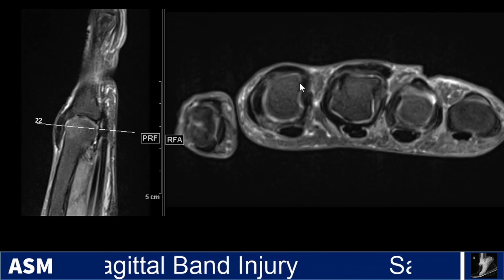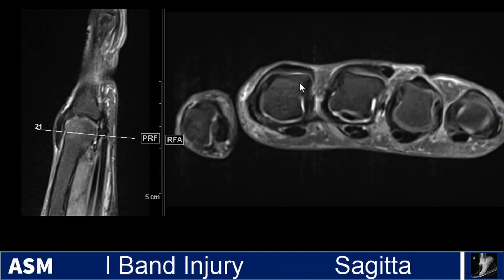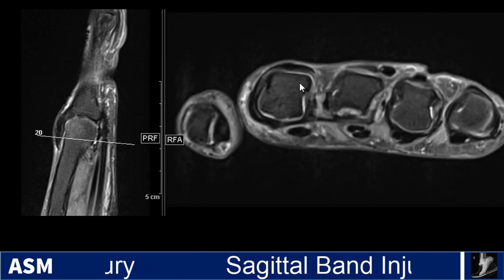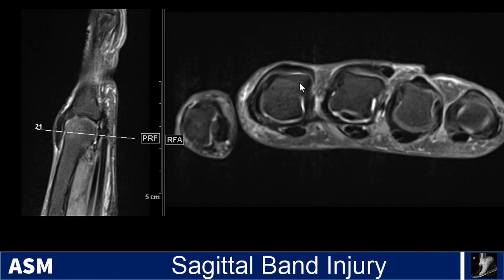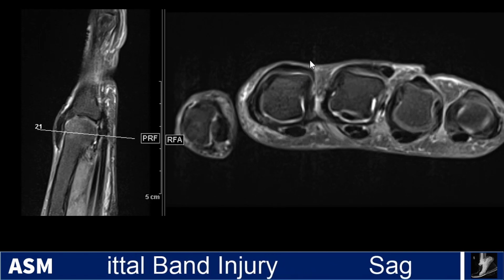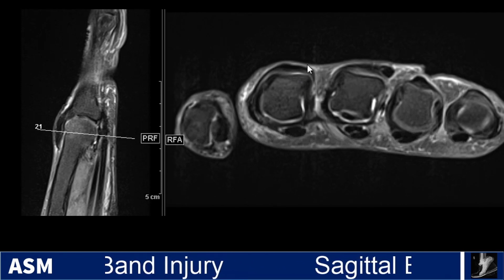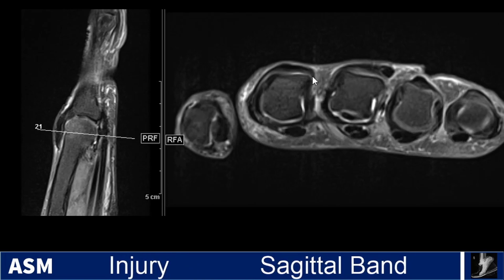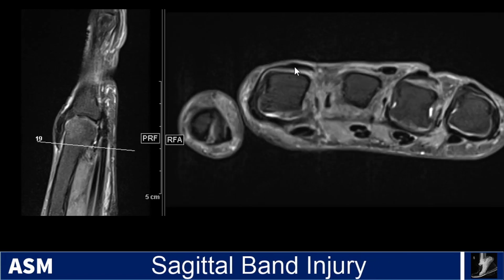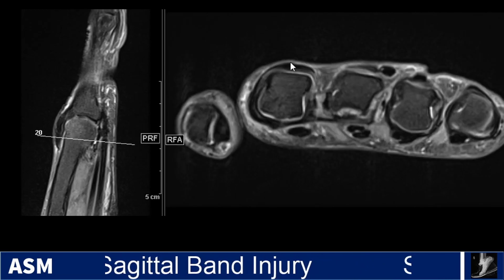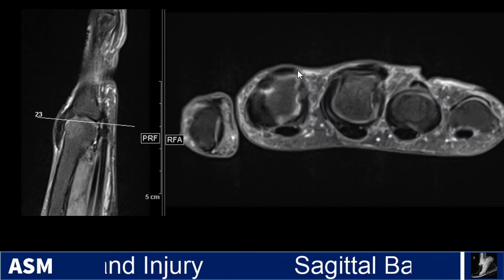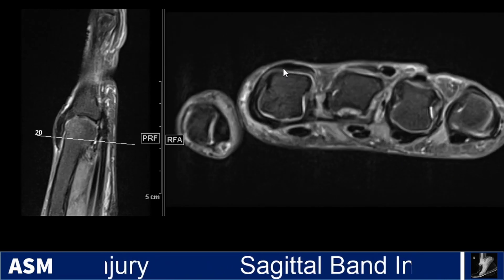This was acquired in the standard full extension of the digits and wrist, which is what we typically do, especially when we're trying to get high resolution images using a coil that typically does not allow for significant motion of the digits. In this position, you would expect to see the extensor tendon sitting on the central dorsal aspect of the metacarpal heads, and this is normal.